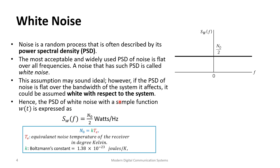Looking at the physics: for a given system, N₀ can be represented as k times Tₑ, where Tₑ is the equivalent noise temperature of the receiver in degrees Kelvin. The higher the temperature, the higher the noise. Here k is Boltzmann's constant, given by a specific quantity.